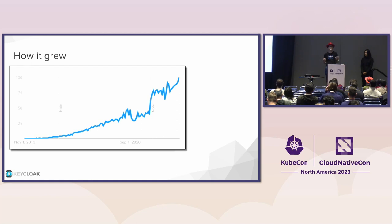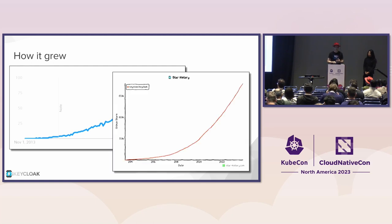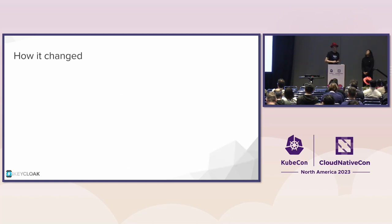And then it grew over several years. These are Google Trends for the keyword Keycloak, pointing upwards. The GitHub stars also pointing upwards, so that's probably good.